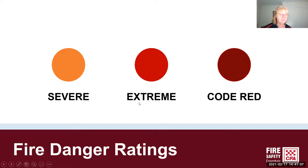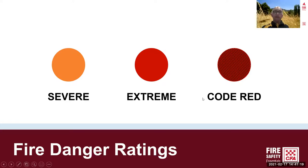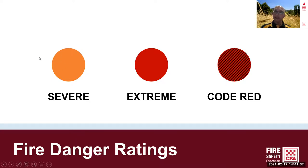The take-home message is to use severe, extreme and code red days as your triggers. If you know it's going to be a severe day, don't wait for extreme or code red — leave the night before or early the next morning, before temperatures get up and conditions become uncontrollable. Know your trigger for when you are going to leave. Where will you leave to? When will you leave? When will you return? All these questions are part of your fire plan.